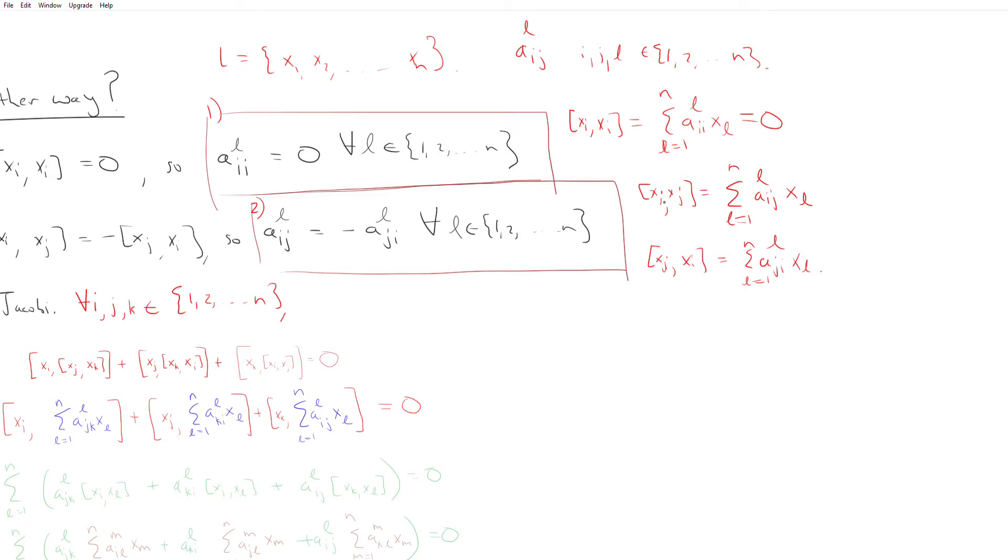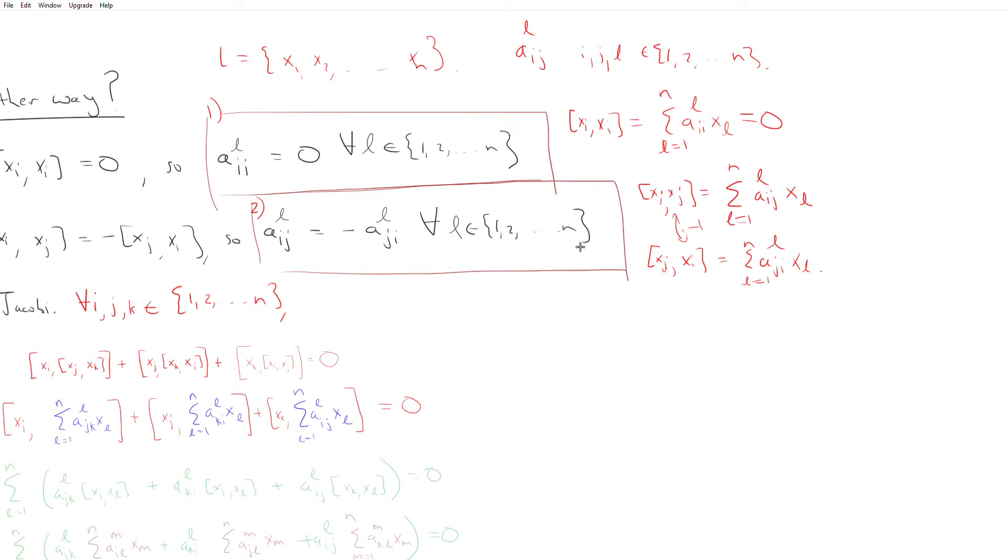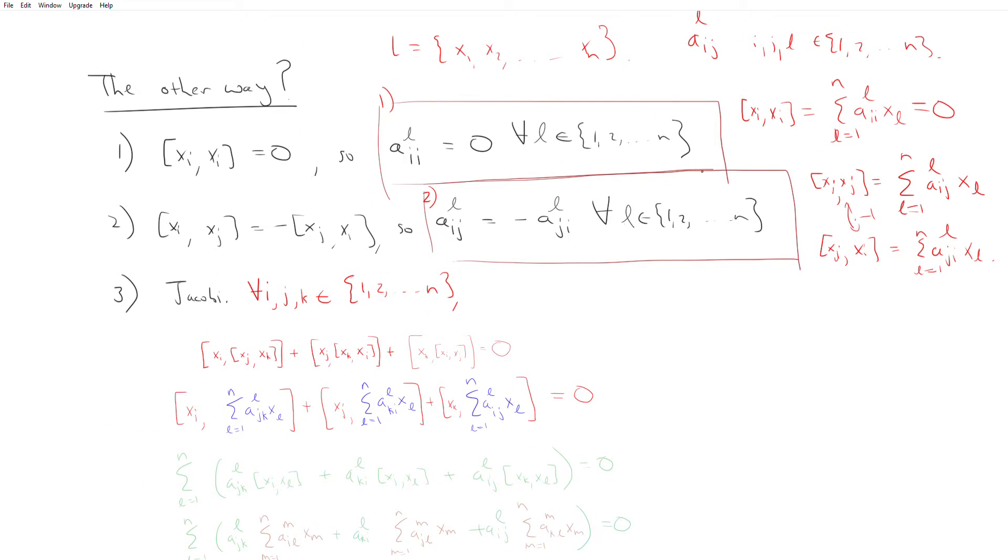So clearly because this and this are related by times minus 1, then each of these coefficients here must be related by times minus 1. And so that's where we get to the second relation.